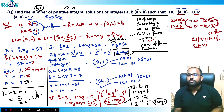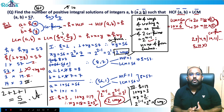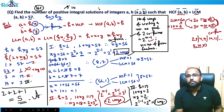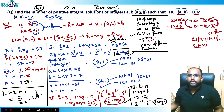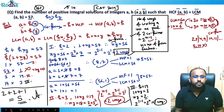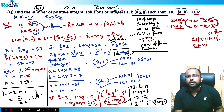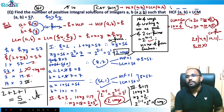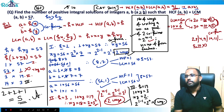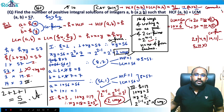This question revises multiple concepts: the 2^(n−1) formula, the ordered vs. unordered pair distinction, the a > b condition, and the HCF-LCM relationship. A similar question appeared in CAT 2014. Try this: if HCF(a,b) + LCM(a,b) = 91 with a > b, how many solutions are there? Answer in the comments!